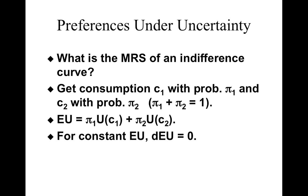Welcome to week 5, second lecture. Now that we have figured out how to represent consumers' preferences under uncertainty, we are ready to figure out the optimal choice. As you must recall from past applications of indifference curves, we would basically pick a point where the slope of the indifference curve is equal to the slope of the budget constraint.